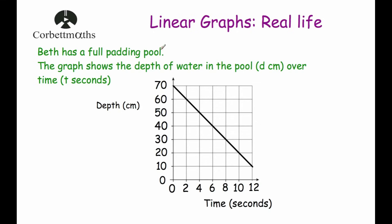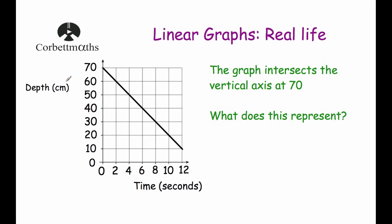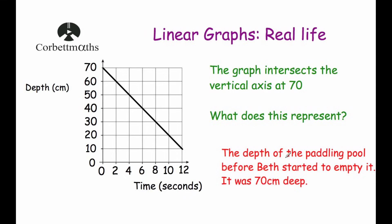Now let's look at the next example. Beth has a full paddling pool and the graph shows the depth of water, d centimetres, over time, t seconds. The pool is being emptied. At zero seconds the depth is 70 centimetres, and the line has a negative gradient — the depth decreases as time goes on. By 12 seconds the depth is 10 centimetres. The graph intersects the vertical axis at 70, which represents the depth of the full paddling pool before Beth started emptying it.